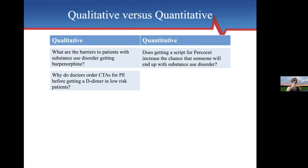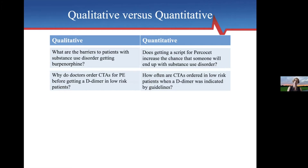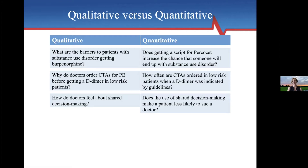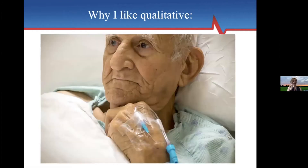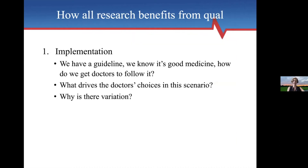We know there's a behavior we want doctors to follow, and we want to understand why they're not doing it. 'How often are CTAs ordered in low-risk patients when a D-dimer is indicated by guidelines?' — that's a quantitative question. 'How do you feel about shared decision making?' — qualitative. 'Does the use of shared decision making make a patient less likely to sue a doctor?' — quantitative. What I really like about qualitative studies is that you get an understanding you wouldn't get from quantitative — you really get to sit down and talk with people and explore in a way that quantitative data doesn't allow.